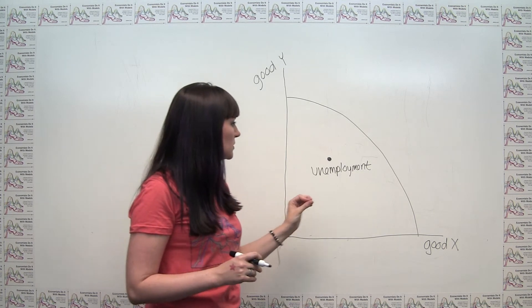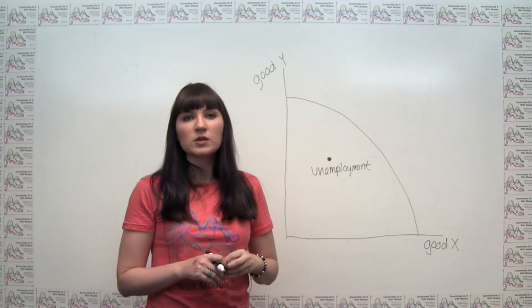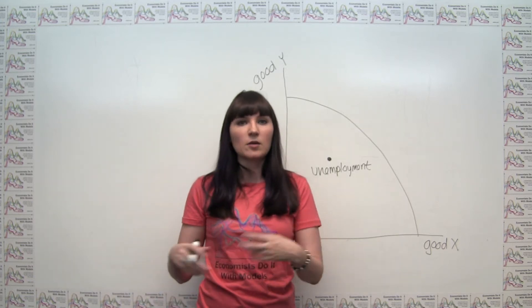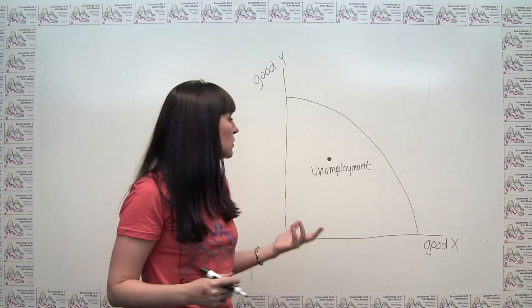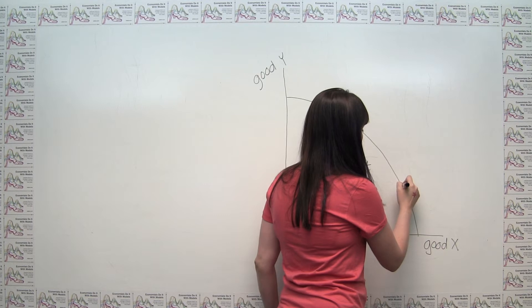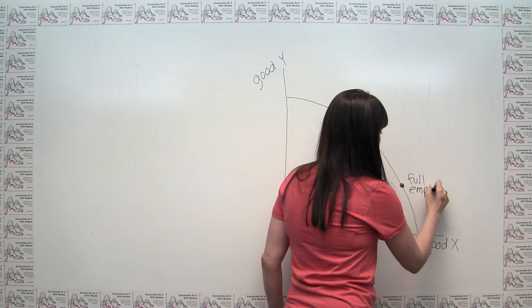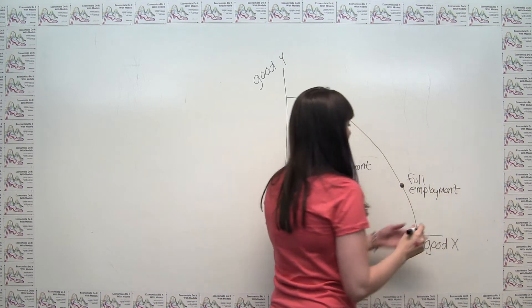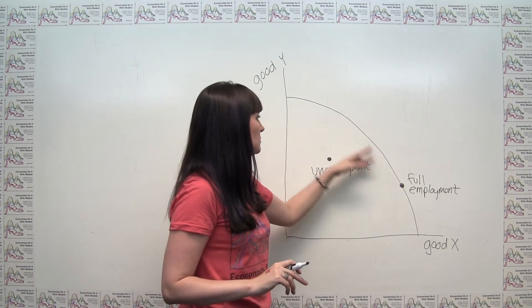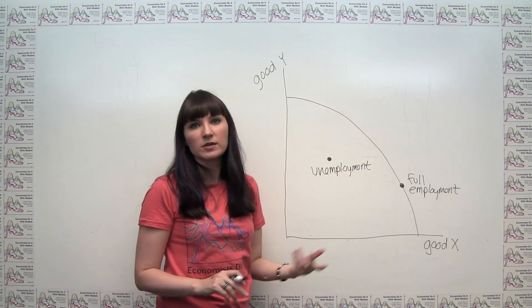But if we assume that under full employment, not only are the resources being used or employed, they're actually being employed in some sort of efficient manner, that we don't have the rocket scientists working at Starbucks when there's rocket science to be done or something like that, then we can actually say that a point that represents full employment would in fact be on the production possibilities frontier. We can't say where necessarily, I just sort of drew this arbitrarily, but if resources are all put to their efficient uses, we're going to be somewhere on this set of maximum outputs that we can get.